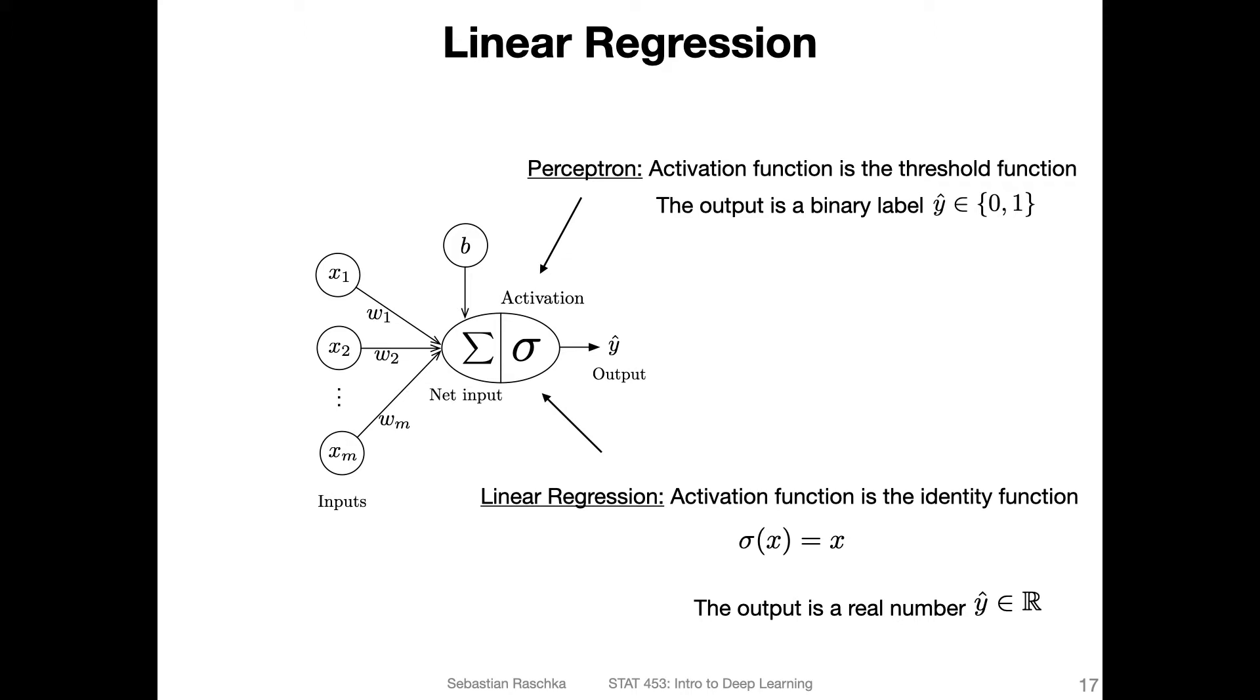Here's a sketch of the perceptron algorithm. First, we compute the net input based on the features of the dataset and the weights, and then there's also the bias unit.